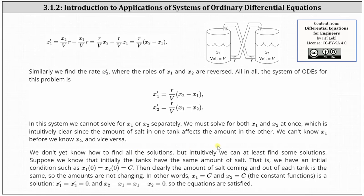We don't know yet how to find all these solutions, but intuitively, we can at least find some solutions. Suppose we know that initially the tanks have the same amount of salt. That is, we have an initial condition that x1 of 0 equals x2 of 0, which is equal to some constant C.